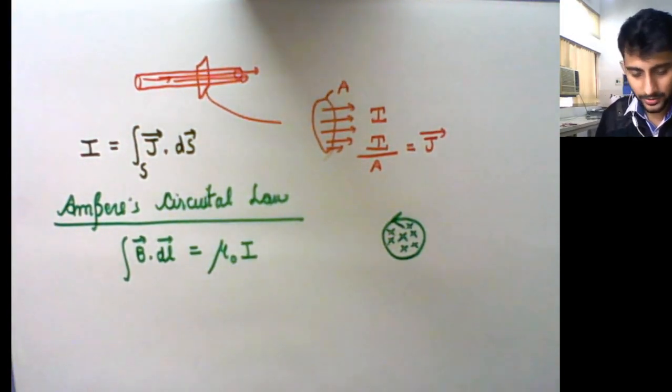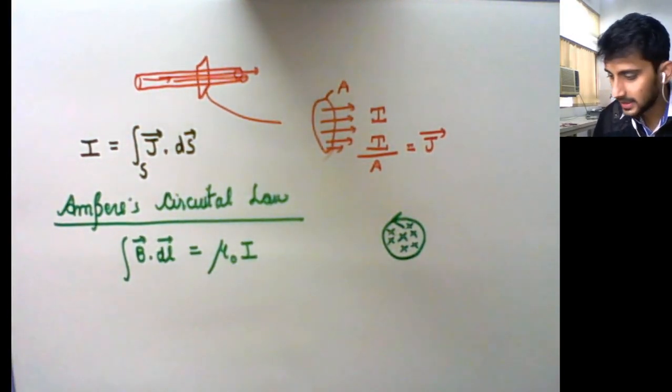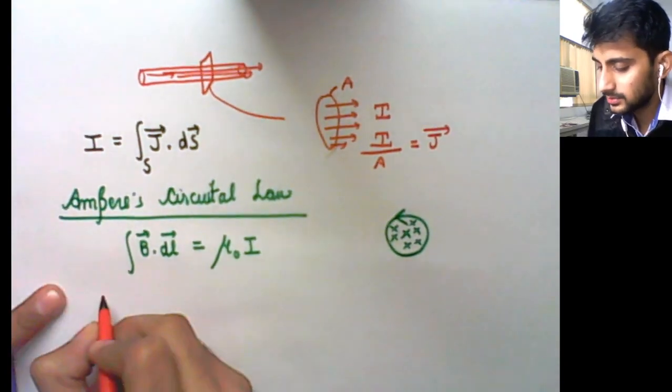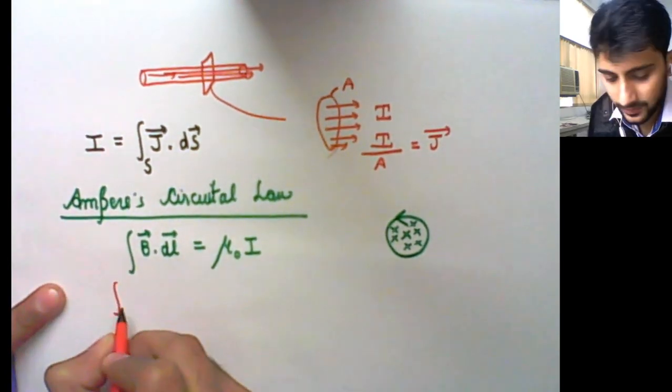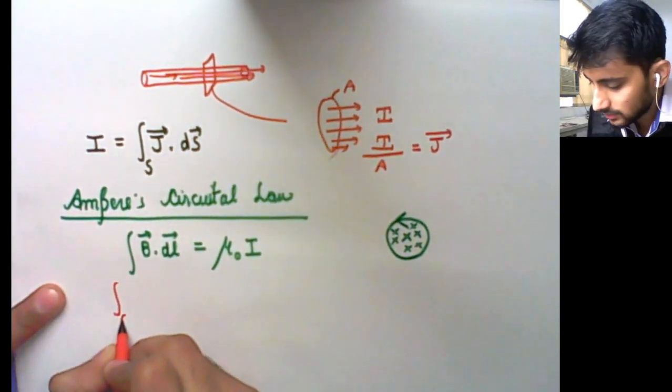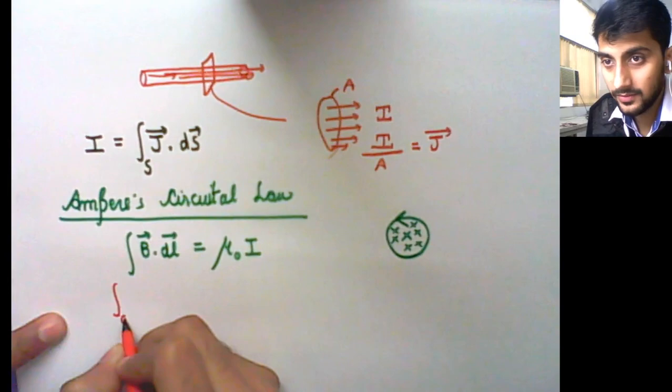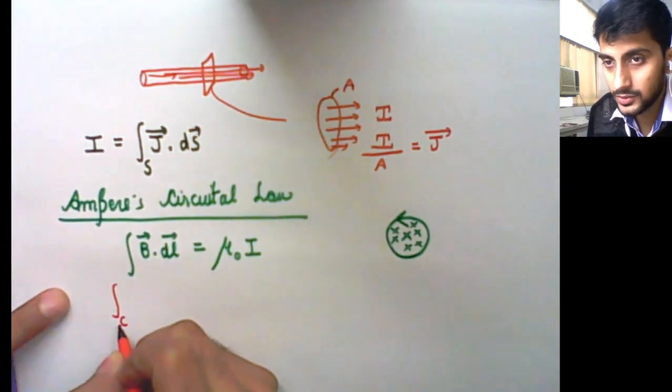You can write I in terms of the closed path L. Here L is a closed path.